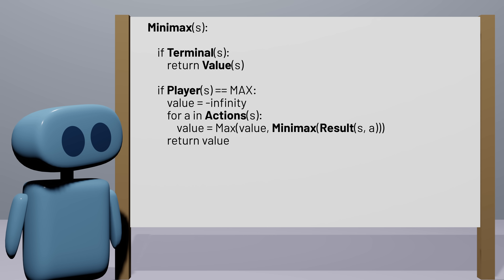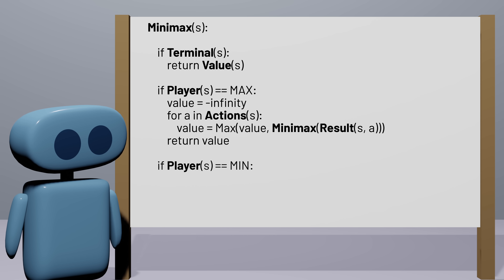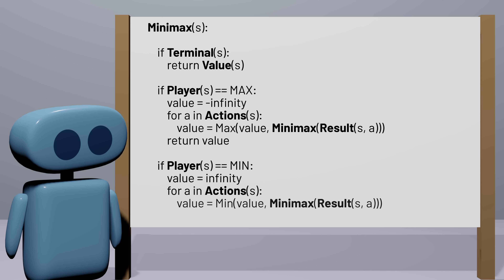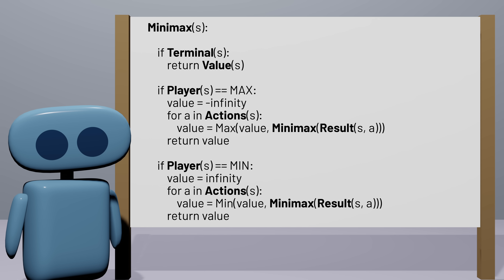Now let's consider the same situation if it's the min player's turn. The approach will be the same, but now we want the value to be as small as possible. So we start by setting the value to positive infinity, so that any action we find will lead to a value lower than it. We loop through all actions, calculating the minimax value of the resulting game state, and update the value if it's smaller than the best value we've found so far. Then we return the value. This algorithm can take any game state and determine its value.